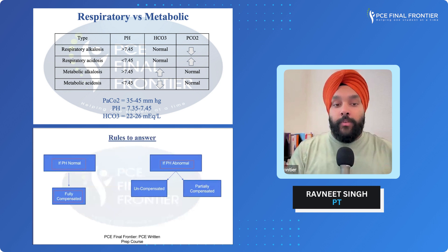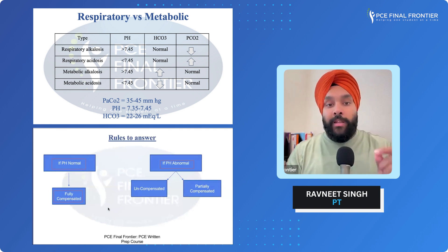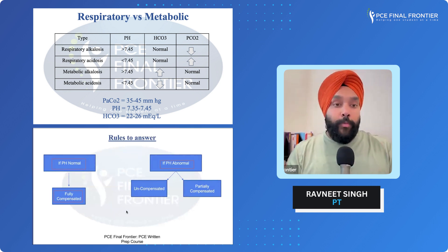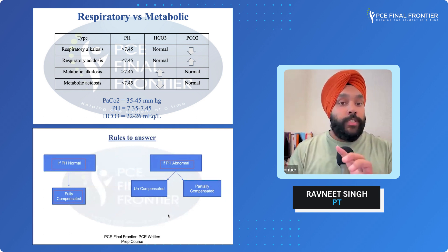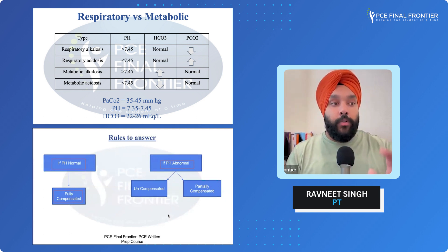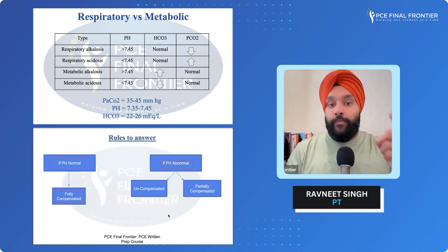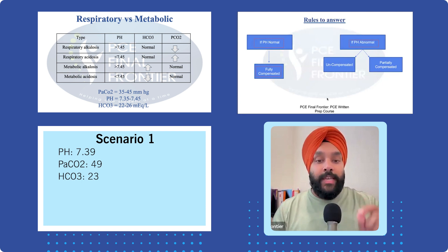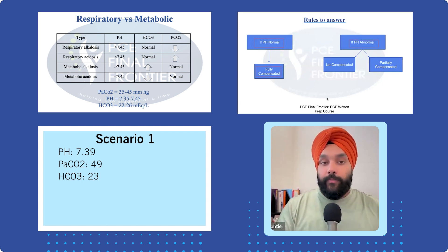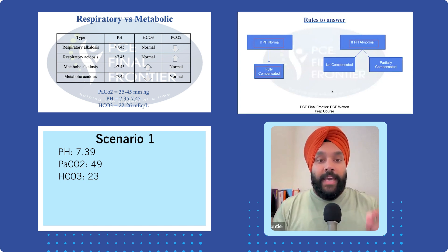Let me give you scenarios one by one. Get your notepad and pen ready — I'm going to give you figures, so write them down. Scenario one: pH is 7.39, carbon dioxide is 49, and HCO3 is 23.